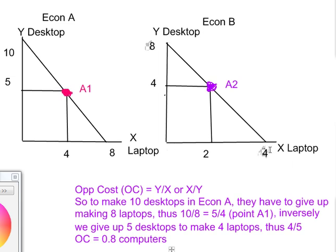Since ten is greater than eight, economy A has the absolute advantage. Remember, absolute advantage and comparative advantage are two different things. Now here also, the maximum that can be produced is eight, and here the maximum that can be produced is four.